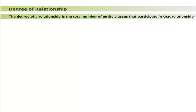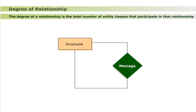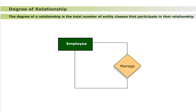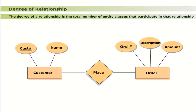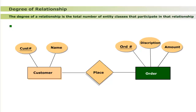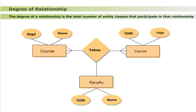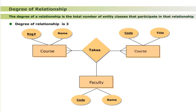The degree of a relationship is the total number of entity classes that participate in that relationship. Example 1: the relationship 'manage' has only one entity class (employee), so its degree is one. Example 2: the relationship 'place' has two entity classes (customer and order), so its degree is two. Example 3: the relationship 'takes' has three entity classes (student, faculty, and course), so its degree is three.